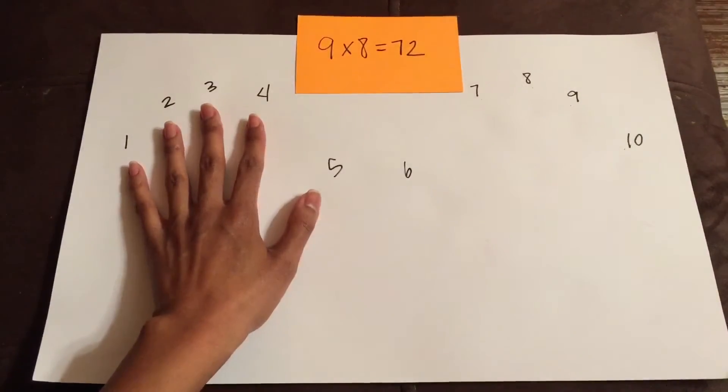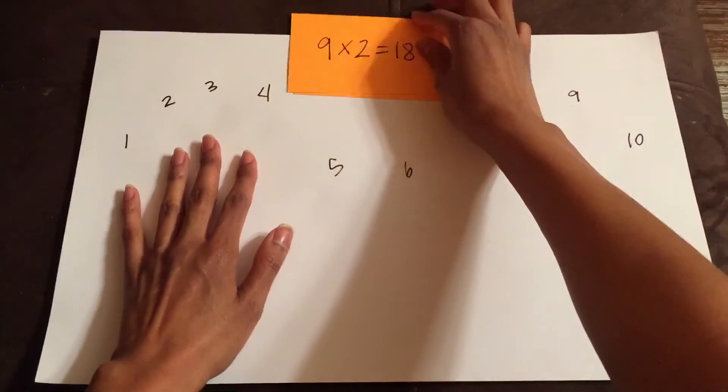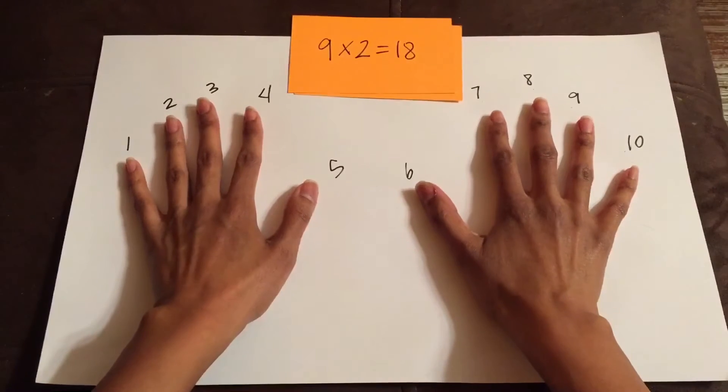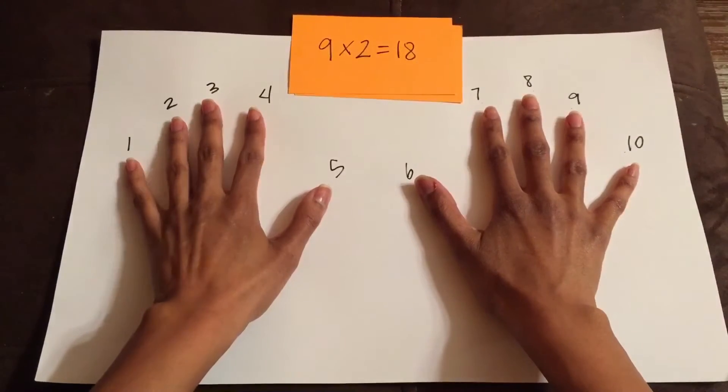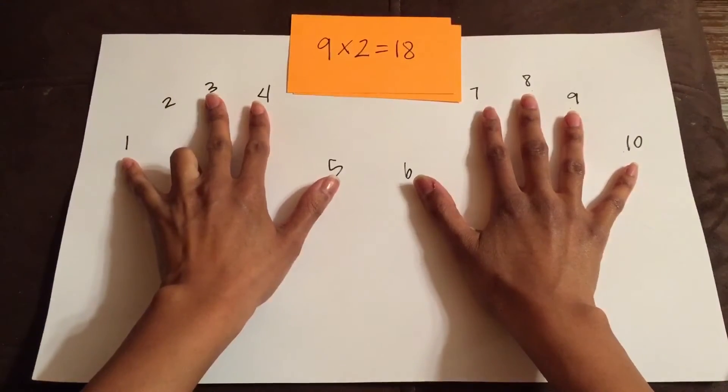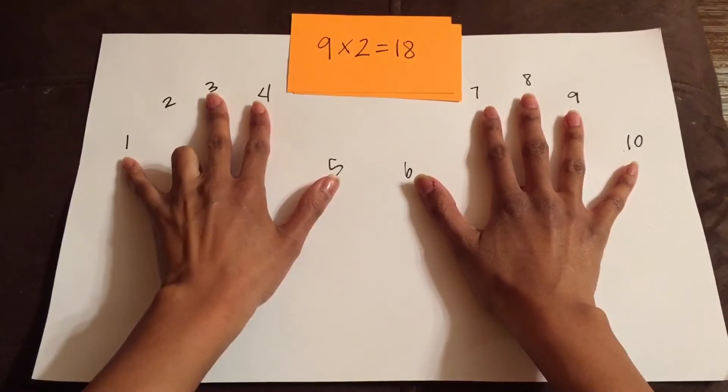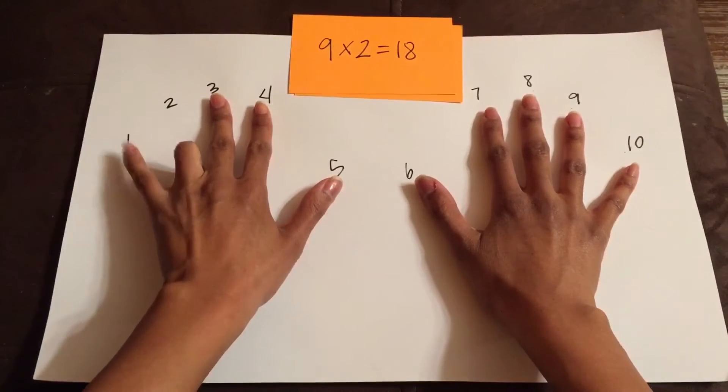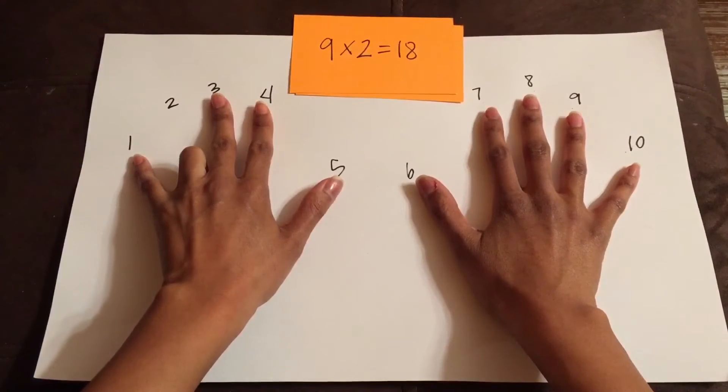If I have another problem, like what is 9 times 2, again, I'm just going to hold down my second finger, and I can see that on the left side of my second finger, I have only 1 up. So my first digit is going to be a 1.